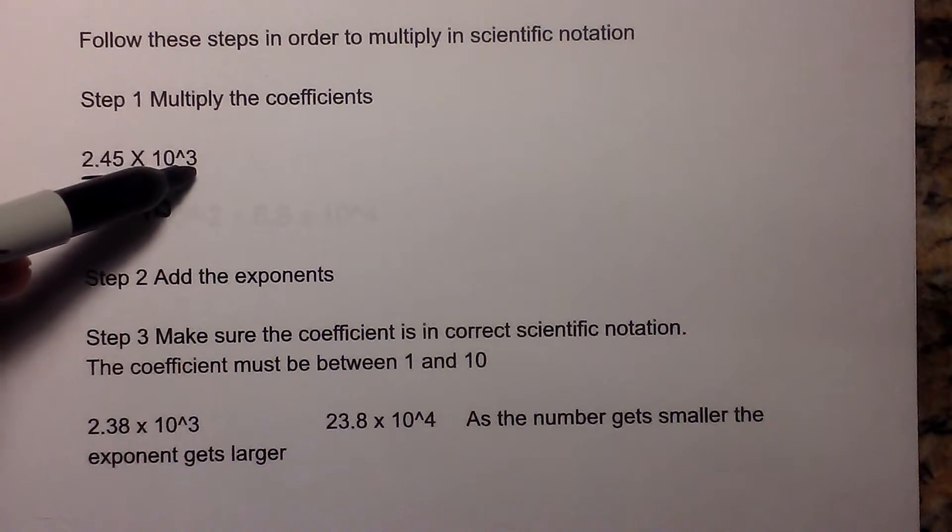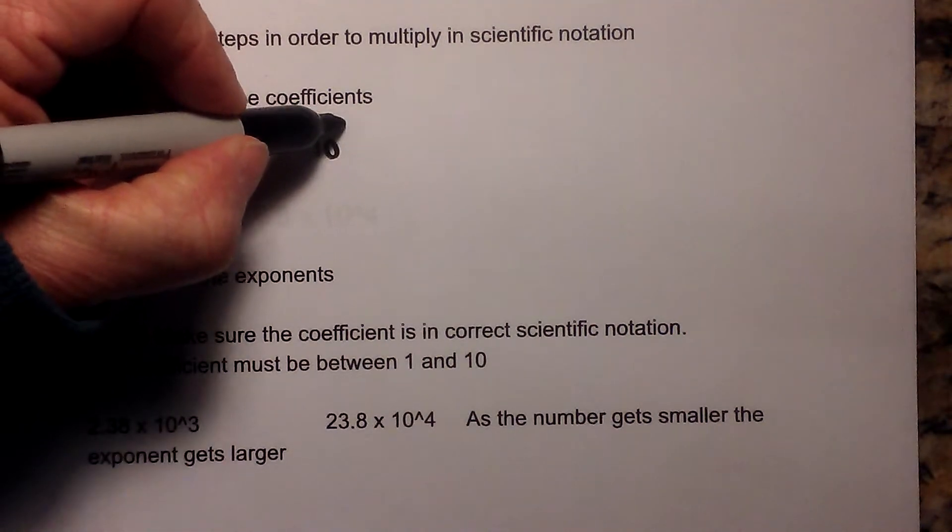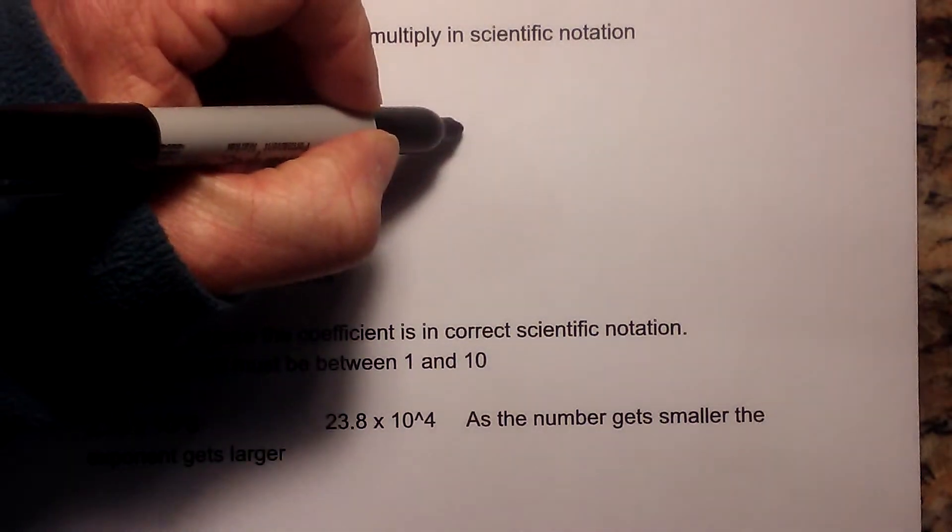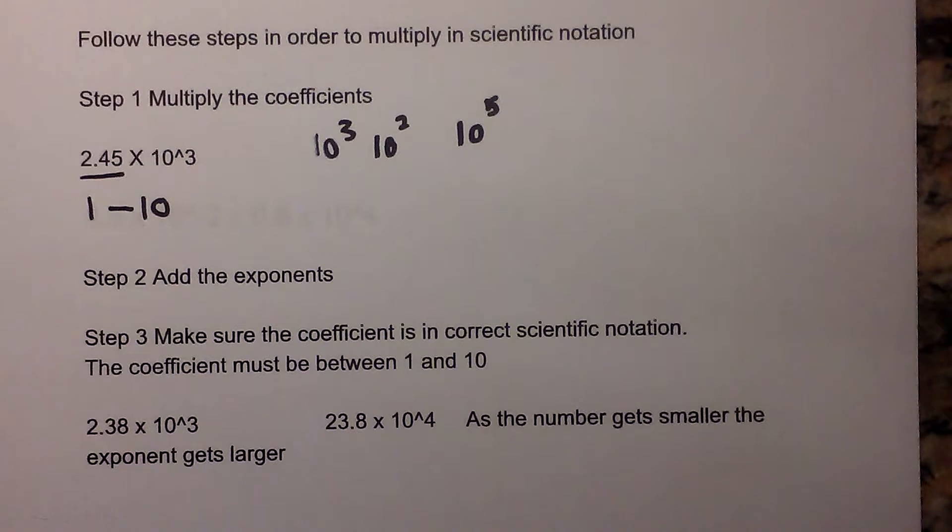Second, this is the exponent, and whenever you multiply, you just add the exponent. So if you're multiplying 10 to the third and 10 to the second, you would just add those, and that would be 10 to the fifth. I'll work some examples to make sense.